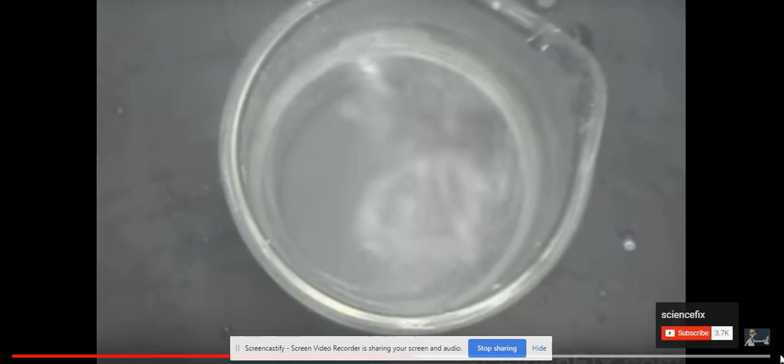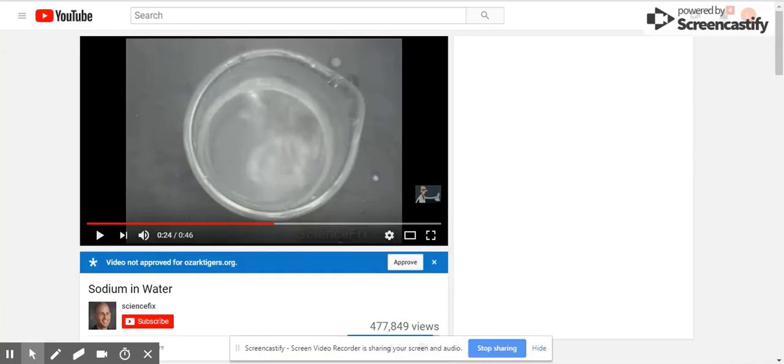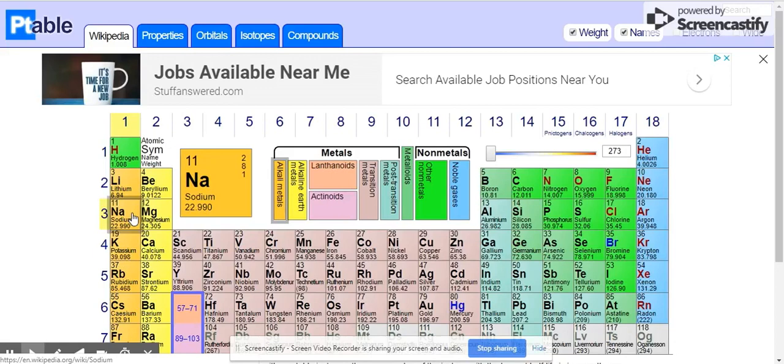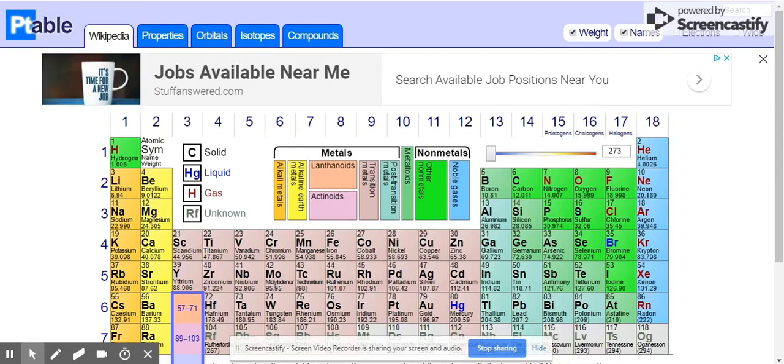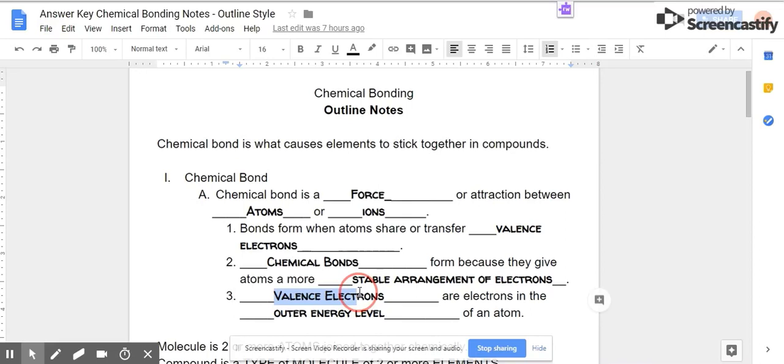So some elements are very reactive. To try and wrap my mind around this, I do kind of like to think of some of these elements tending to be on the hangry side. Some of these elements tend to have this driving force, and it's based on these valence electrons. So valence electrons, what do they look like? What are they?